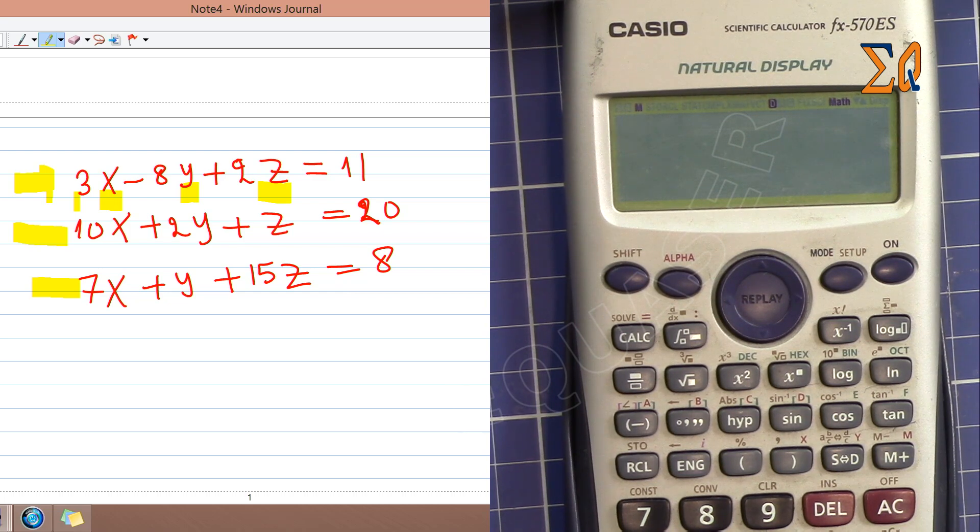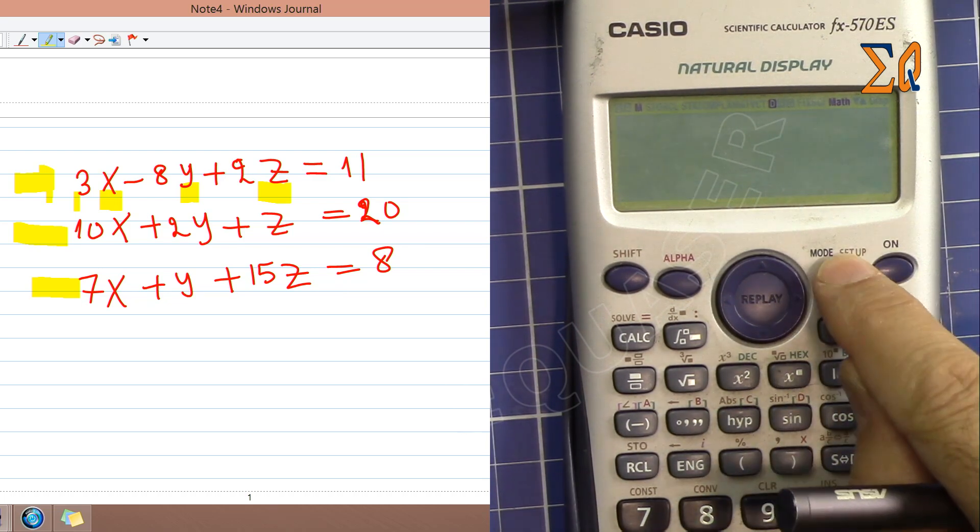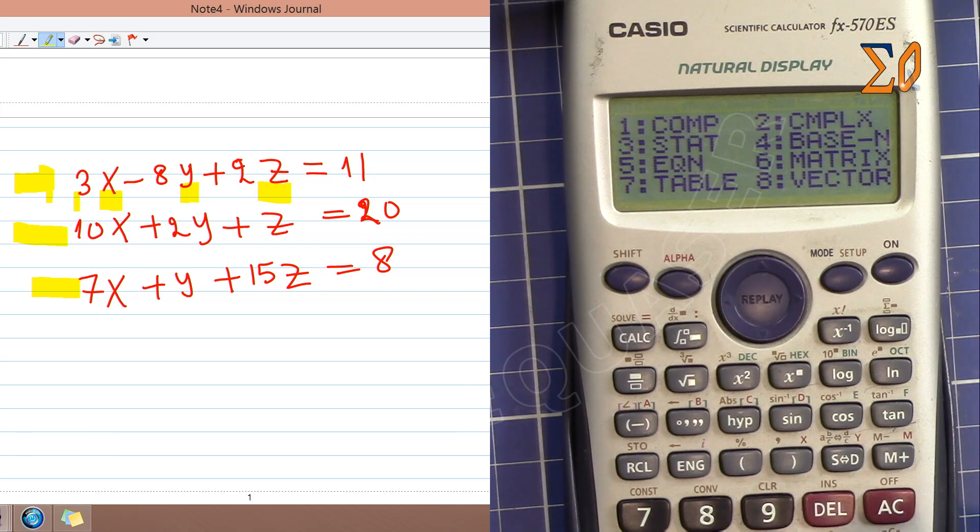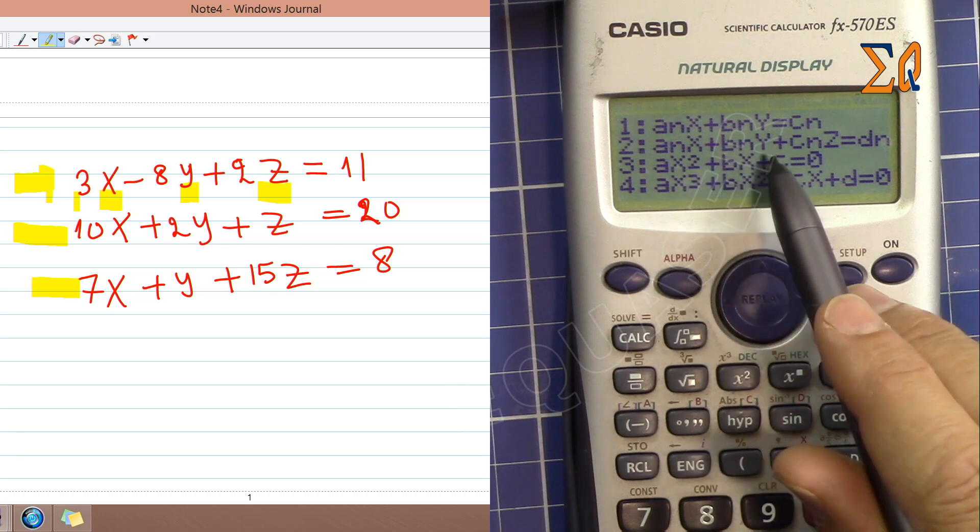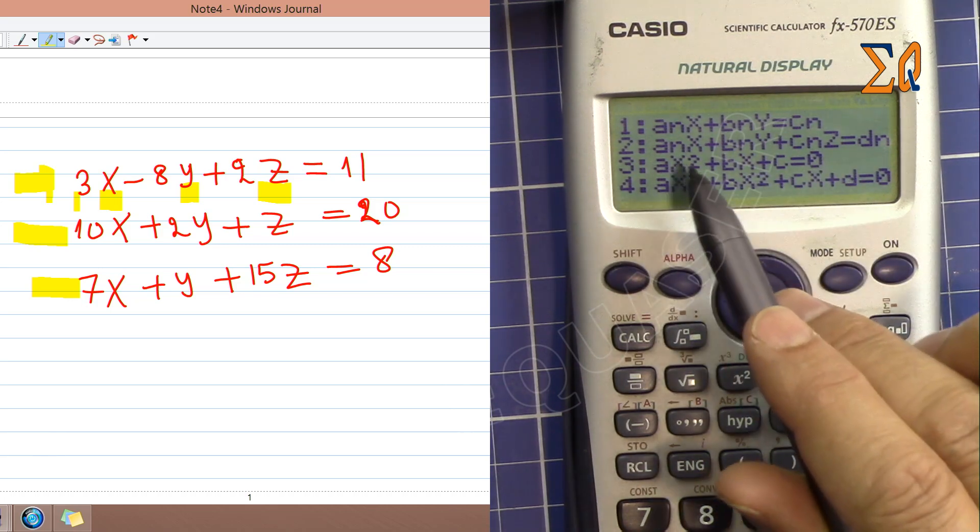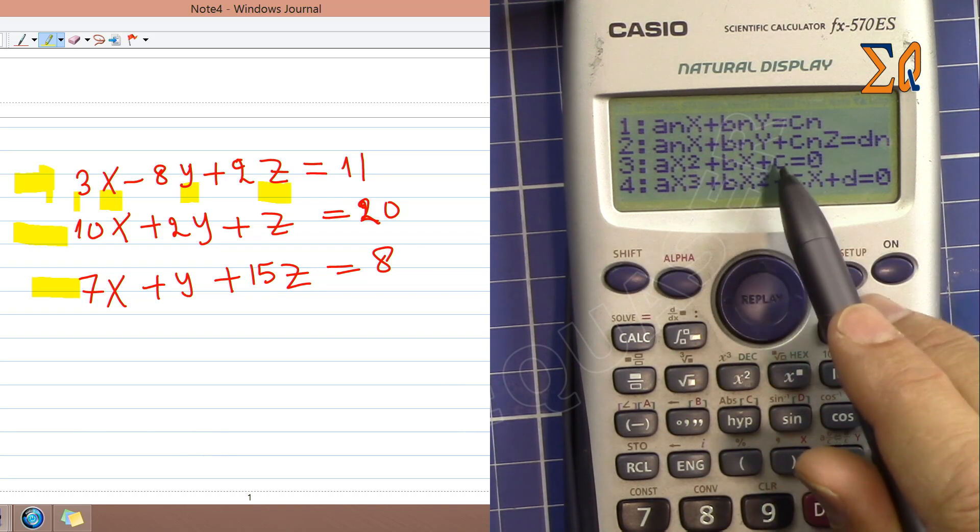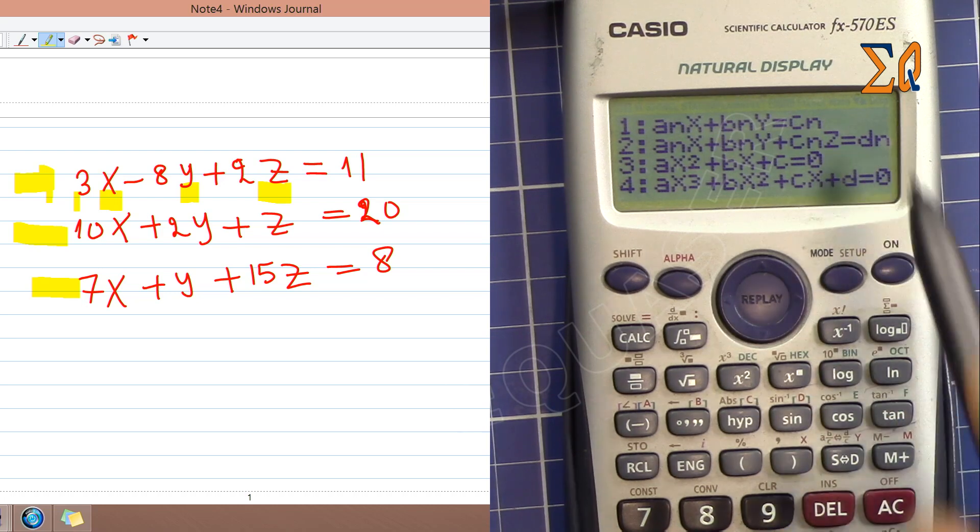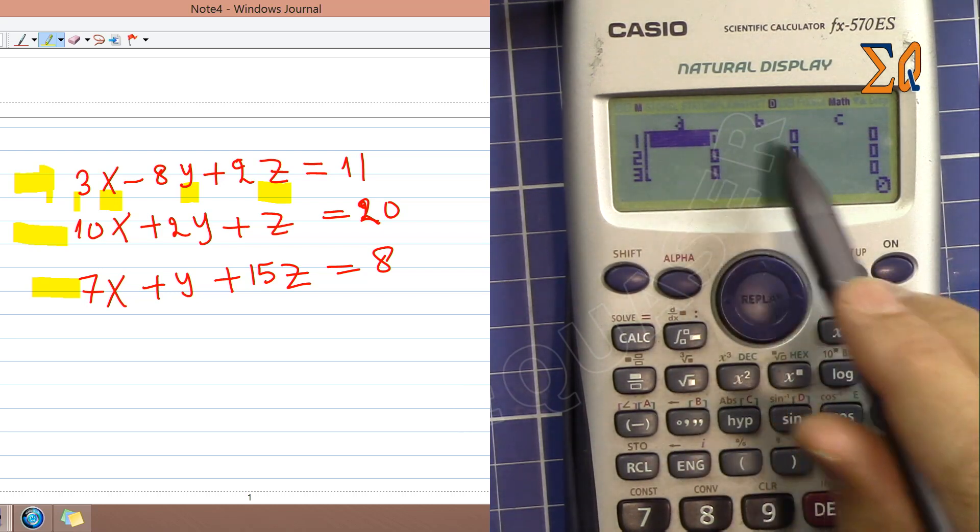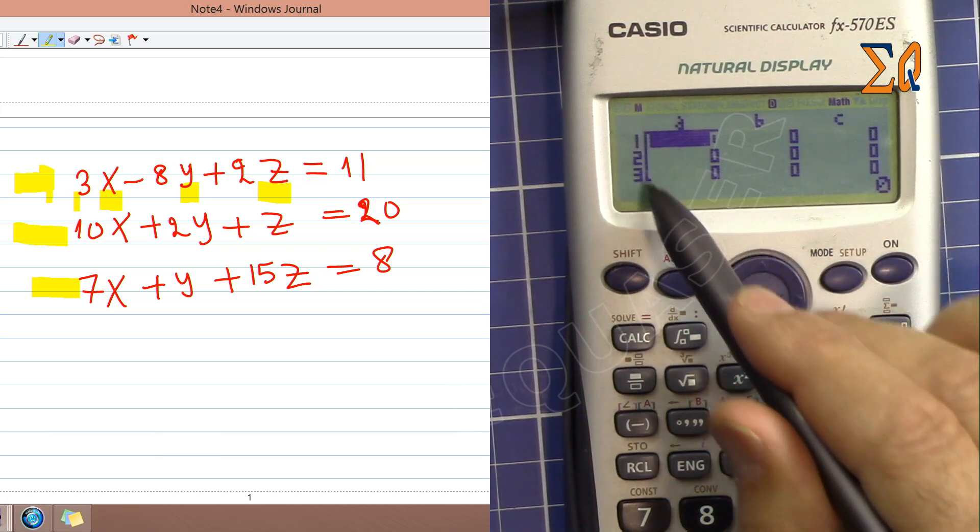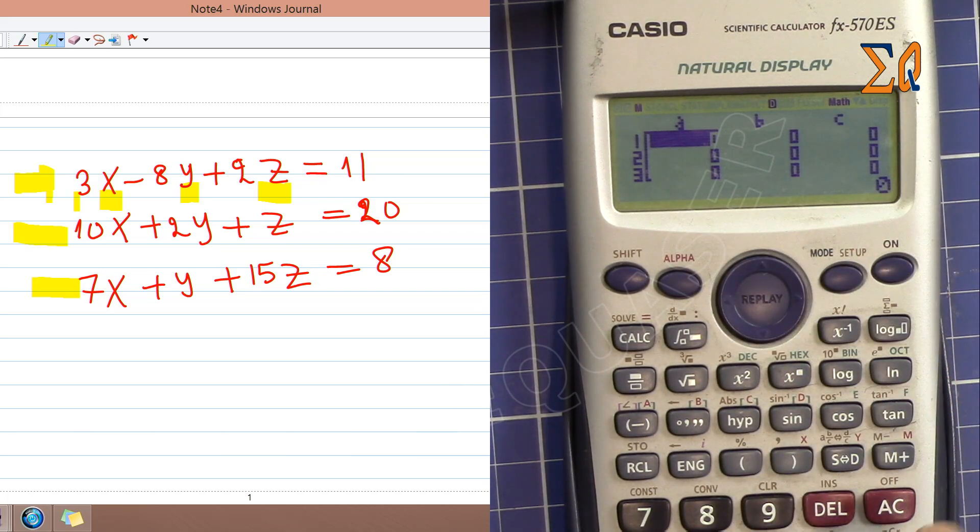To find x, y, and z, press mode, go to number 5 for equation, and then number 2 this time. You can see x, y, and z here: ax plus by plus cz equals d. I'm pressing number 2. You see a, b, c, and d is there because the square bracket is not revealed yet.